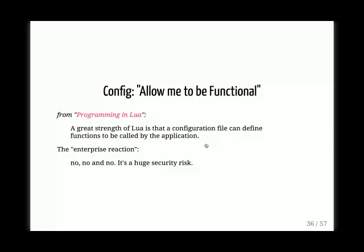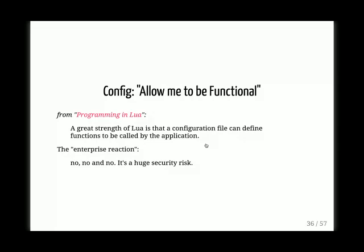Lua says that the great strength of Lua is that a configuration file can define functions to be called by the application. And of course, the enterprise reaction from C# and Java shops is 'no, no, no — it's a huge security risk.' But it doesn't have to be a security issue. In Lua, you can create sandboxes and define exactly which functions you allow to be invoked within the sandbox. Then you load untrusted code, pass this environment along with that code, and if it tries to call some other function or misbehave, you just throw and don't run it.